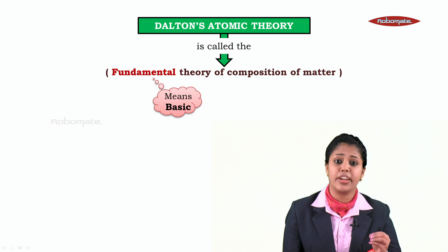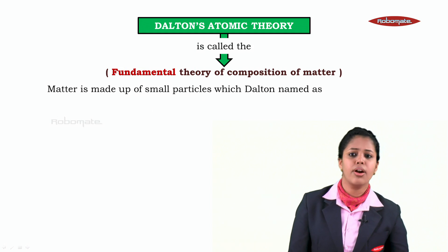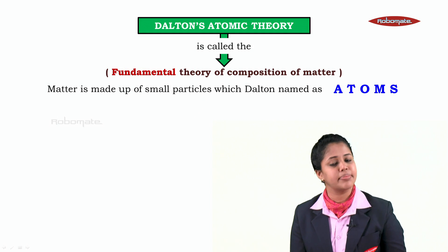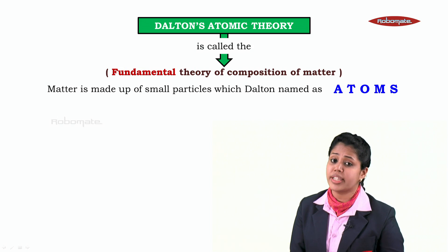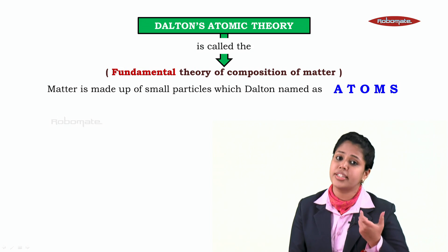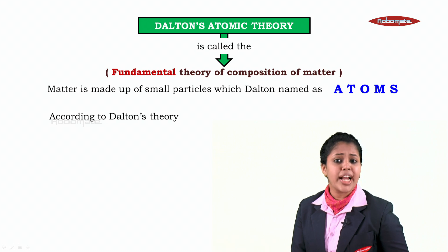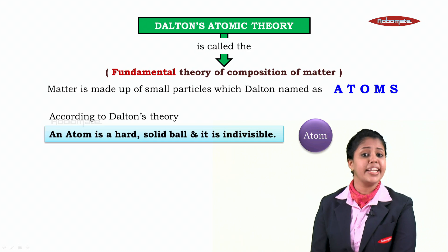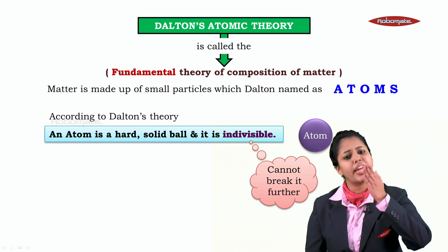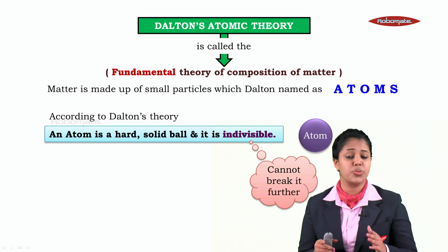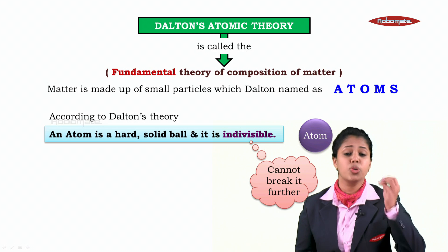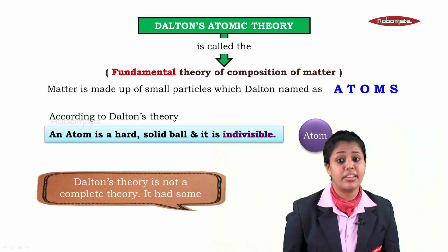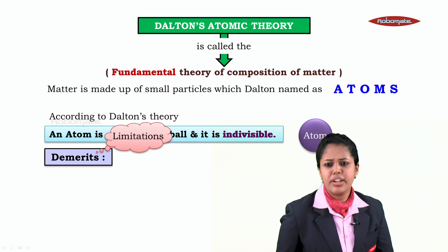Matter is made up of small particles which Dalton named as atom. Dalton was the first person to tell us about the word atom. According to Dalton's atomic theory, an atom is a hard solid ball that is indivisible — indivisible means you cannot break it further. It's the final stage. Now, Dalton's theory is not a complete theory; it had some demerits — demerit means limitations.